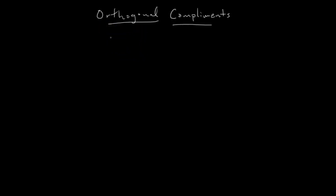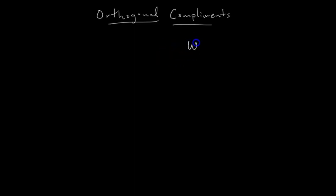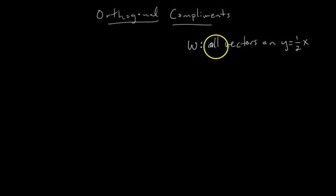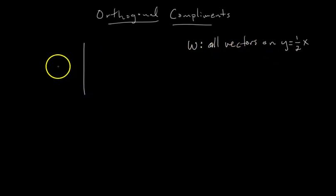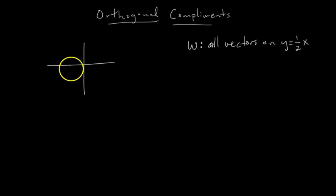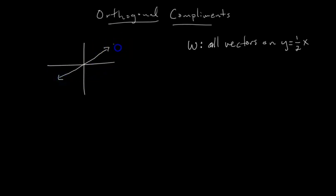What is an orthogonal complement? First, let's define a subspace W. Let's say this subspace W contains all vectors on the line y equals one-half x. Let's draw that and get a geometric interpretation — something like this with a slope of one-half. This line is W.